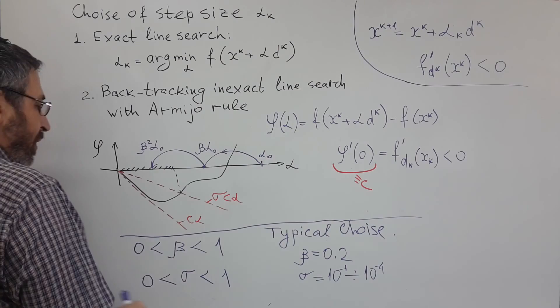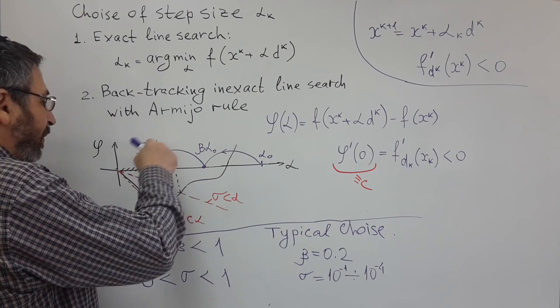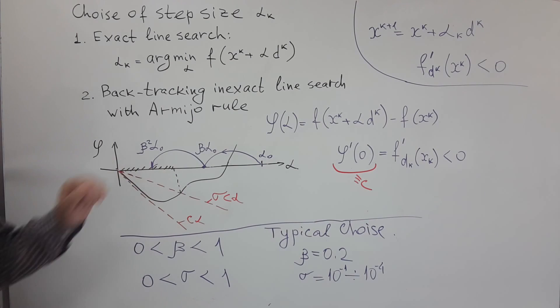In general, it's some constant between zero and one. And if our stopping condition is not satisfied, we again multiply by beta, and so on, until we reach some reasonable stopping condition. Let's talk about this condition.